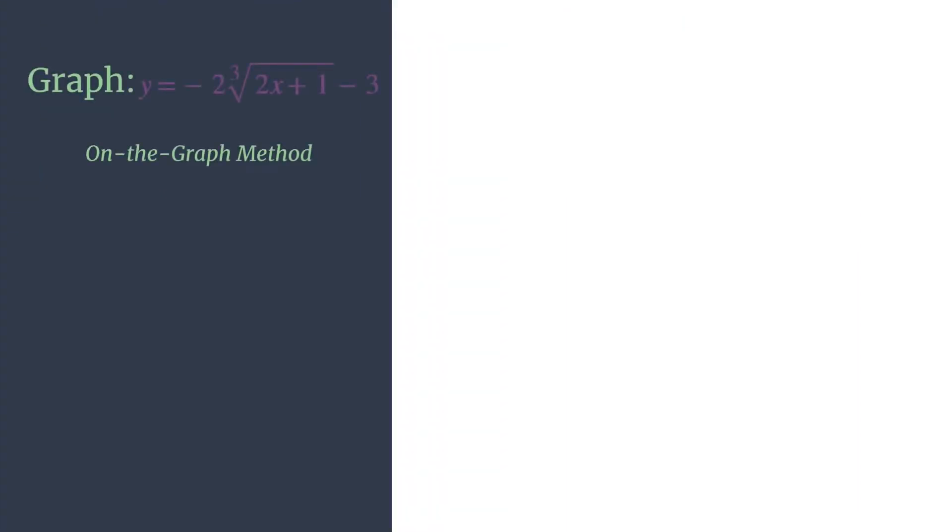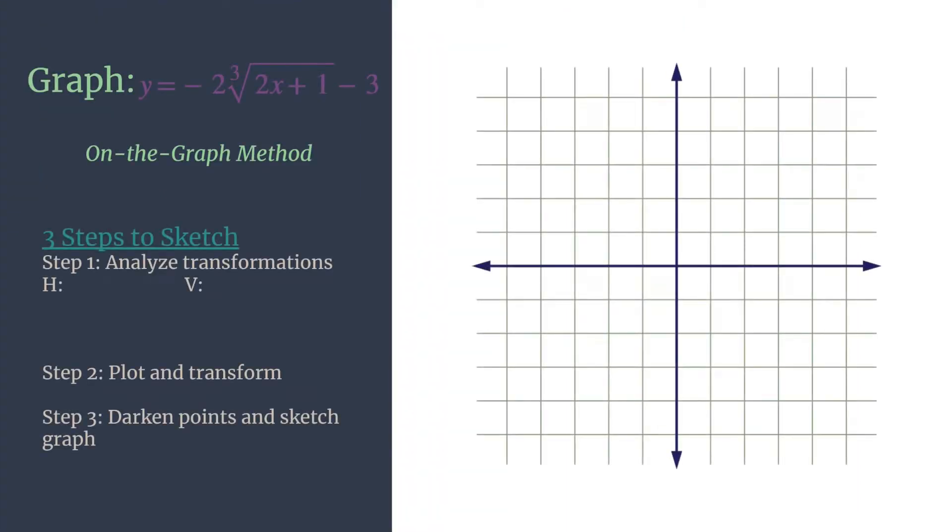Here is our equation again and our outline. We said we are transforming the parent function, the cube root of x. So that's our sideways snake here. It's a good thing to keep in mind before we really jump in.